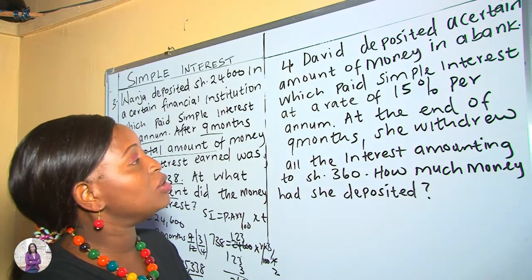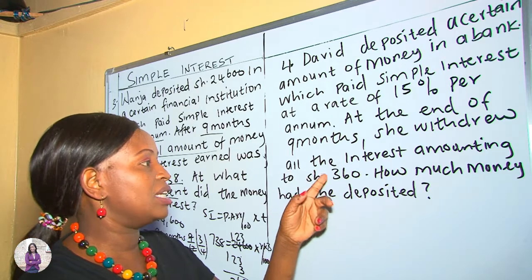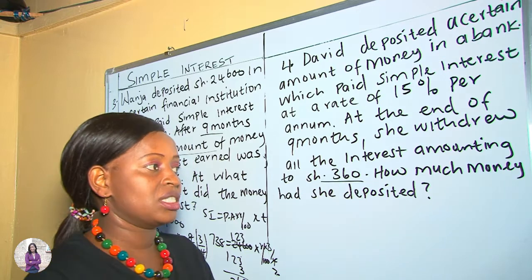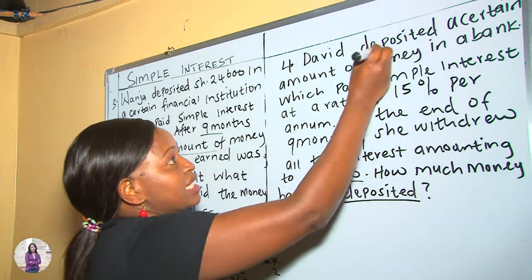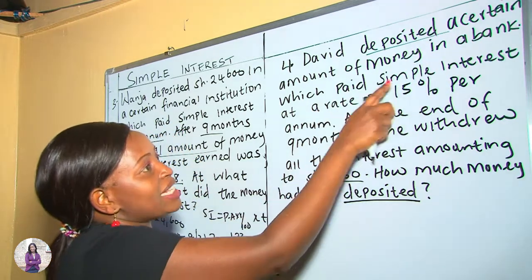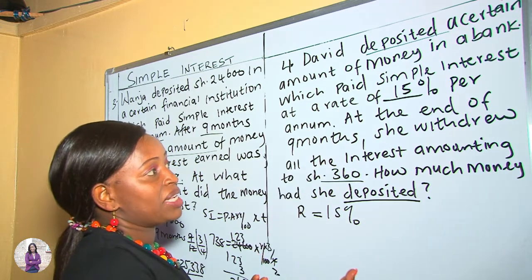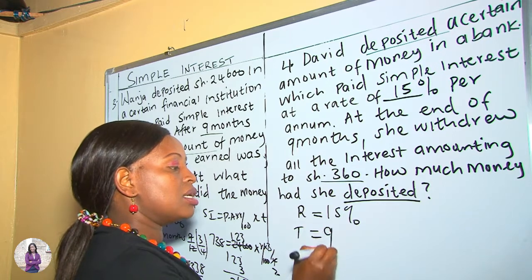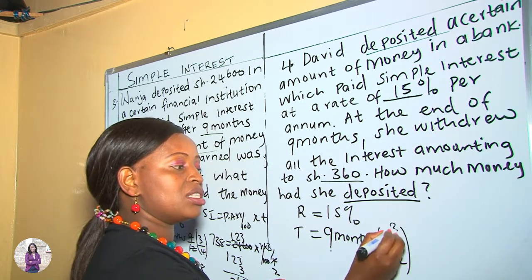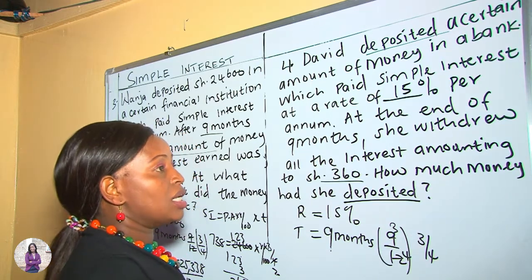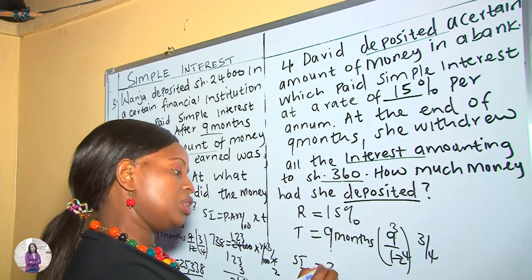In example 4, David deposited an amount of money in a bank which paid simple interest at a rate of 15% per annum. At the end of 9 months she withdrew all the interest, amounting to 360 shillings. How much money had she deposited? The rate is 15% per annum. The time is 9 months; converting to years: 9/12 = 3/4 of a year. The simple interest is 360. We are looking for the principal amount — the money deposited.